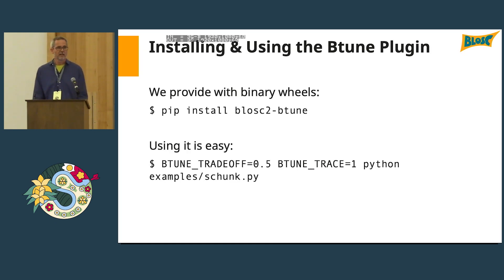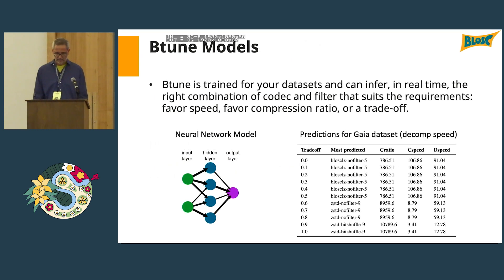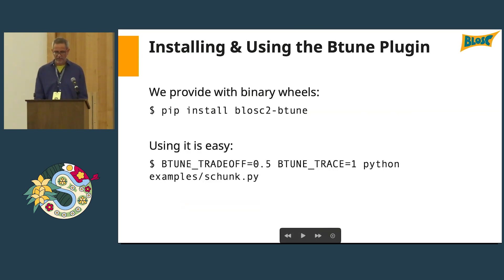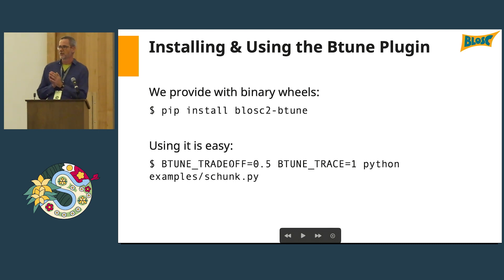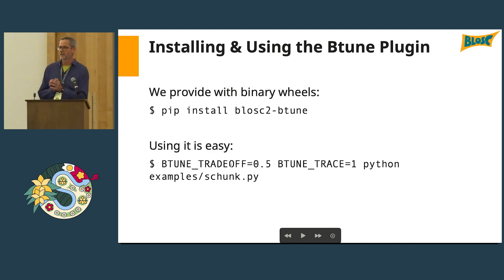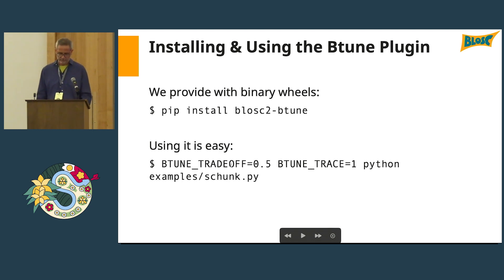When creating an array, you specify a trade-off parameter to tell BTune what you prefer. A trade-off close to zero means you prefer more speed. A trade-off close to one means you prefer a higher compression ratio. A trade-off of 0.5 means you want a balance between speed and compression ratio. BTune is able to optimize for whichever goal you specify.